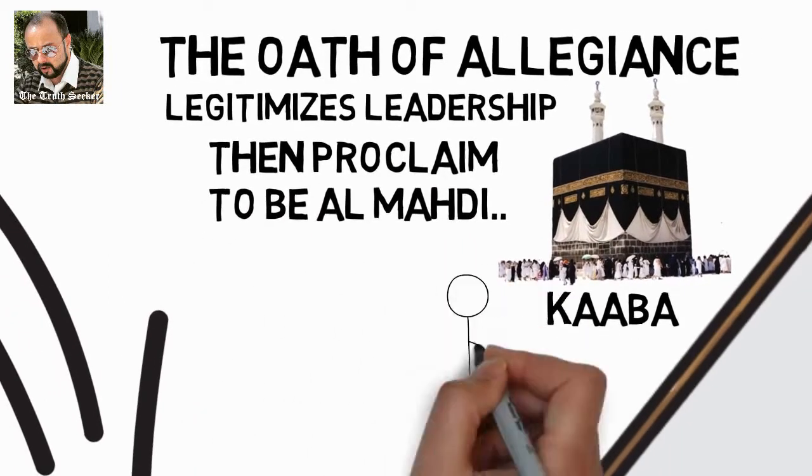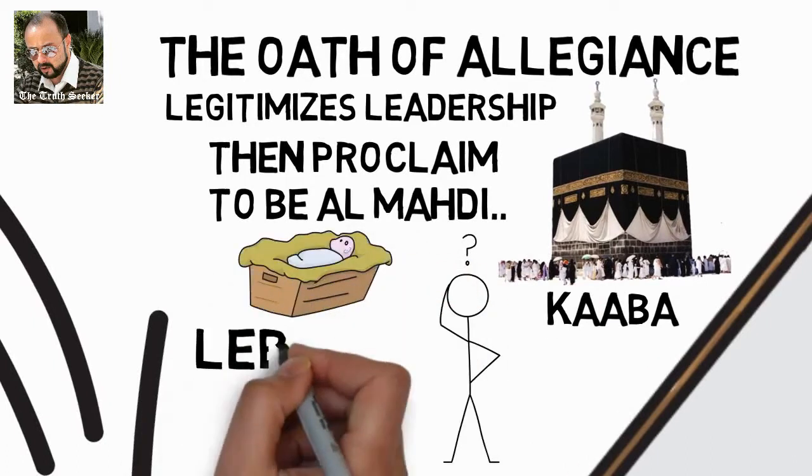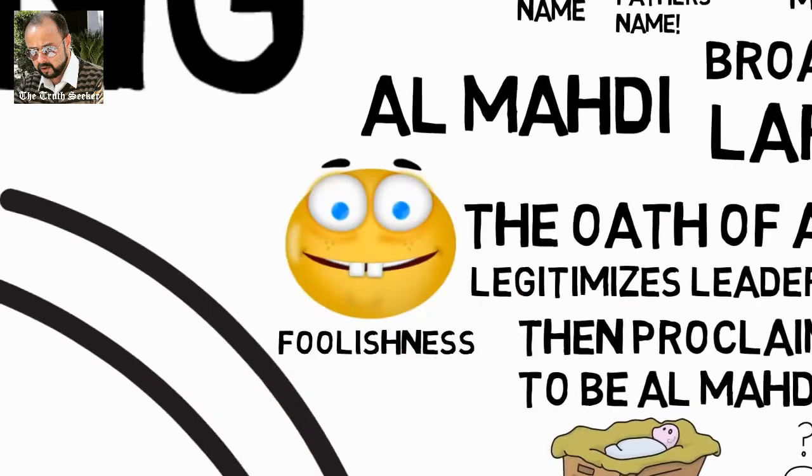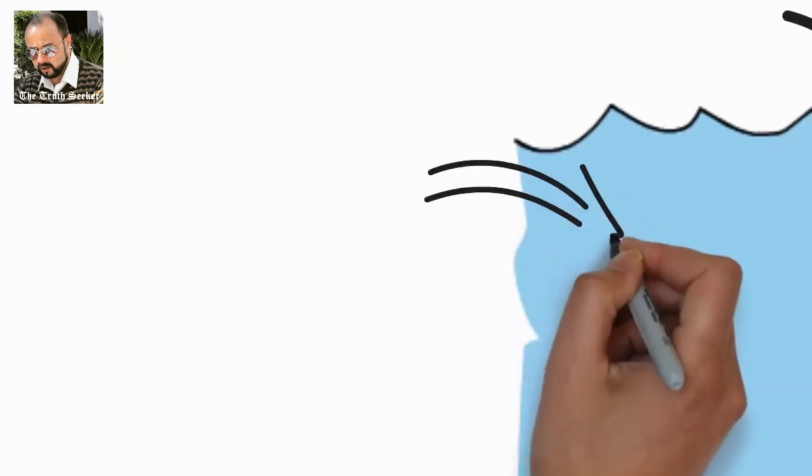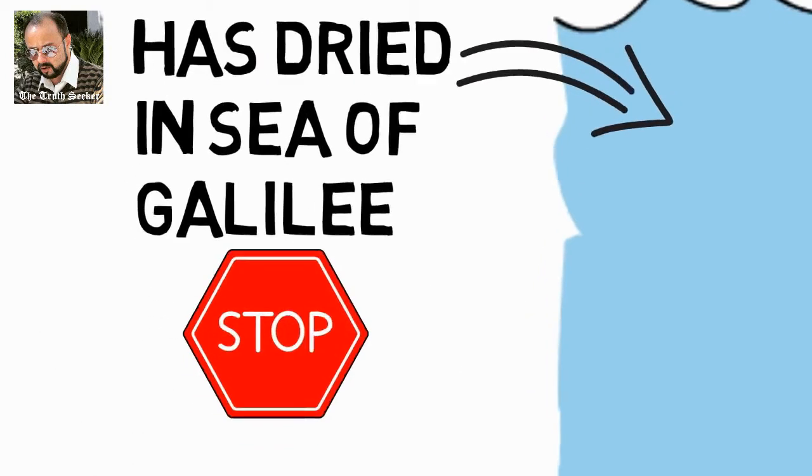So stop asking these foolish questions. Is he born already? Is he in Lebanon? Or maybe in Indonesia? That's foolishness. Al-Mahdi cannot emerge until the water has dried in the Sea of Galilee. So stop these foolish questions.